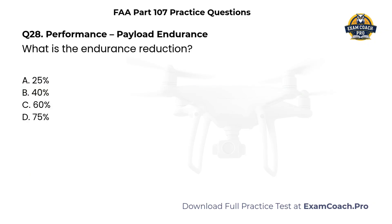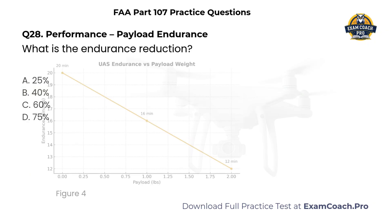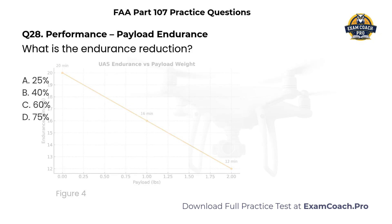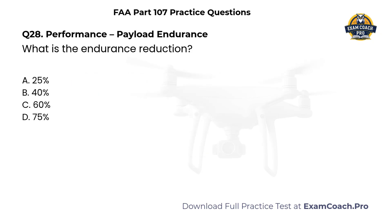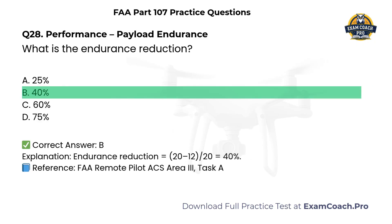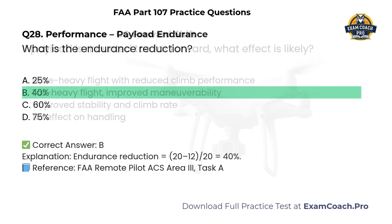Performance. Payload endurance. Refer to Figure 4, payload versus endurance chart. What is the endurance reduction when a 2-pound payload reduces endurance from 20 minutes to 12 minutes? A. 25%. B. 40%. C. 60%. D. 75%. Correct answer: B. Endurance reduction equals 8 divided by 20, which is 40%.